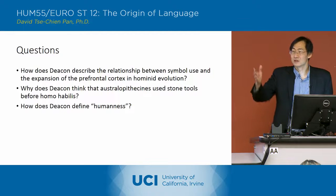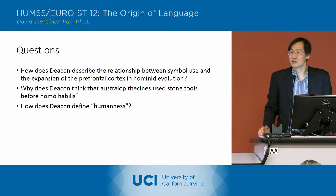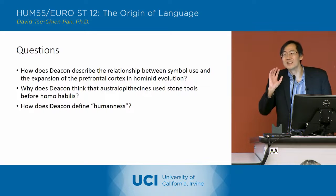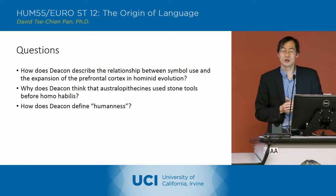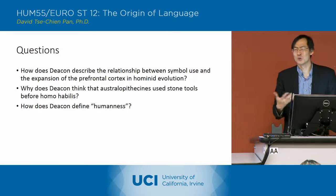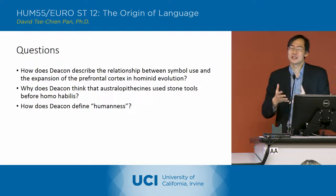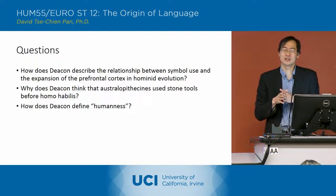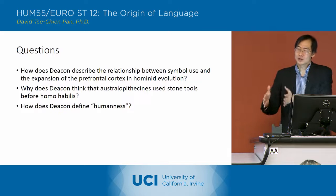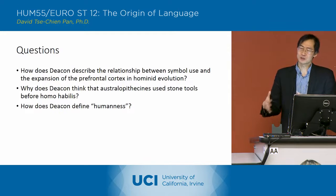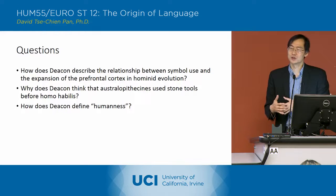How does Deakin define humanness? Scott answers: making and passing along symbols. Yes — making and passing along symbols. So he actually coins the term homo symbolicus, a category that includes all the different biological species that would have used symbols.